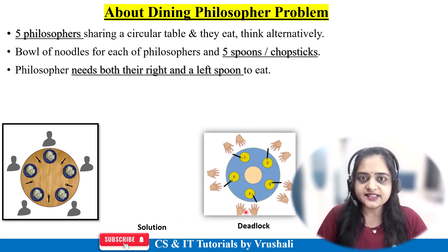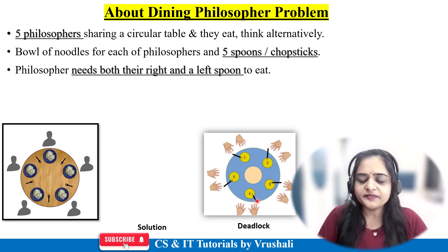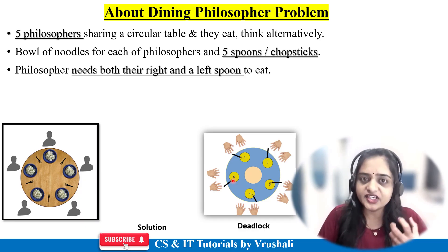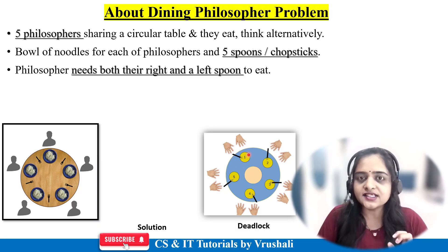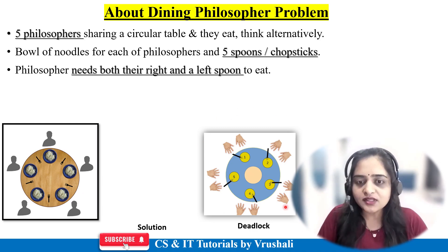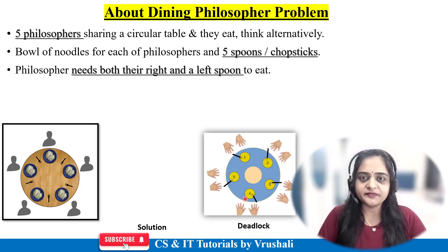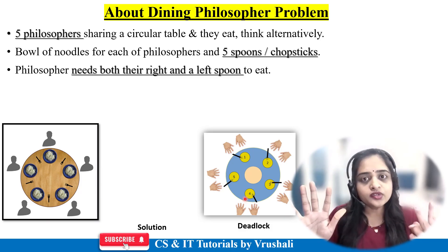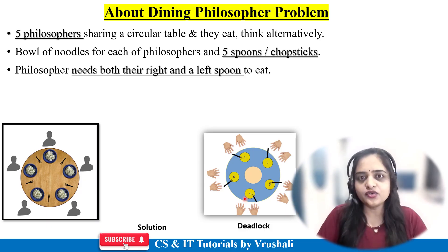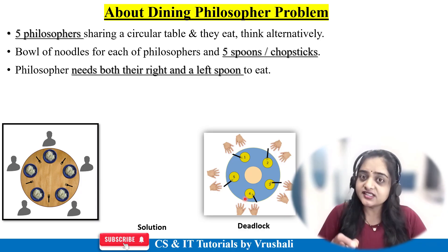Person number 4 wants to eat the noodles, but he has only 1 spoon — he cannot eat. Person number 4 is waiting for person number 5 to finish eating and release their spoon. Similarly, person number 5 is waiting for person number 1 to finish their food and give their spoon to person number 5. In this way, all the philosophers go into a waiting state. No one can release their resources or release the spoon. This kind of situation occurs in operating system — suppose there are 5 processes and only 2 resources. Every process requires those 2 resources, so a conflict occurs. This is called the dining philosopher problem.